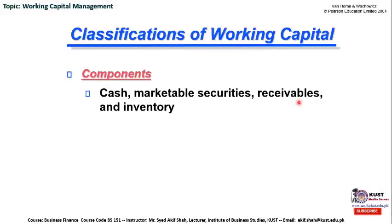Receivables are the company's account receivable current asset. Similarly, inventory would be in raw form as well as in the form of finished goods. So in principle, these four titles belong to the current assets of the company, and managing these four accounts is known as working capital management.